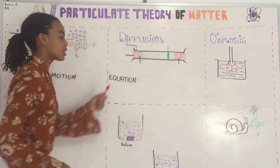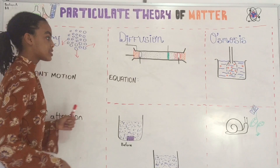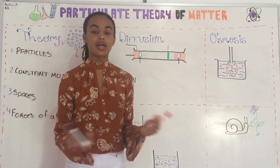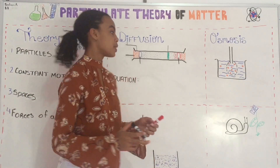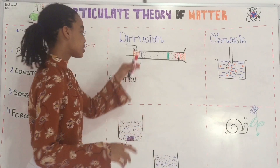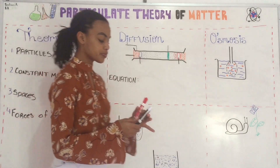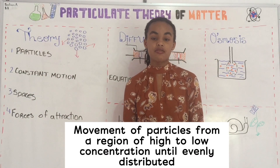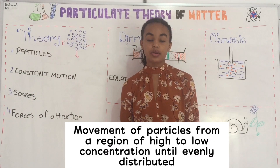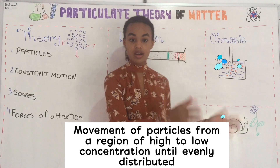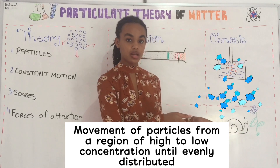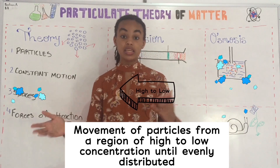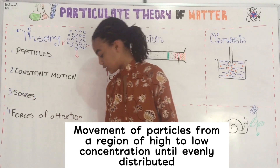Now we're going to look at a really easy experiment that helps to prove the particulate theory of matter. This is diffusion. Diffusion is the movement of particles from a region of high concentration to a region of low concentration until evenly distributed.